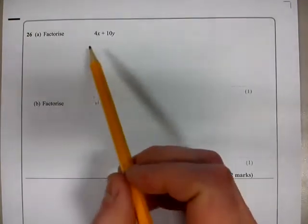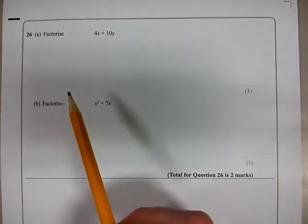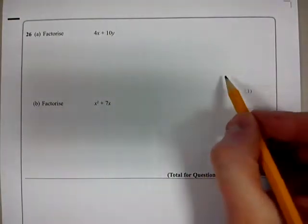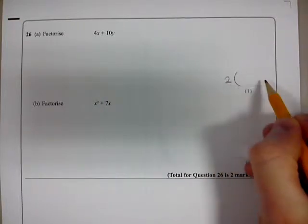In order to do that we have to work out what all of the terms will divide by. Both of these terms will divide by 2. Therefore we can write this expression with the 2 outside the brackets.